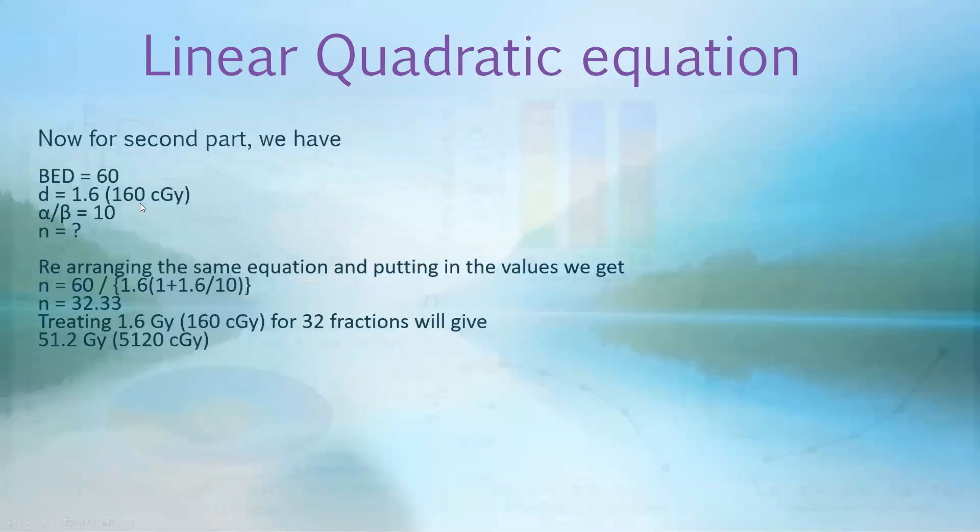Now solving it for 160 centigrade per fraction, we just rearrange the same equation. Alpha beta will be 10, we are talking about tumor. BED we just calculated was 60. And daily dose this time we are talking about 160 because we want to change the fractionation. When we rearrange the same equation, we leave N on one side and move everything else to the other side. We have a BED of 60, and then the new dose of 1.6, and 10 is our alpha by beta. We get 32.33, by rounding it we get 32. Treating 160 centigrade for 32 fractions will give us 5,120 centigrade or 51.2 gray.